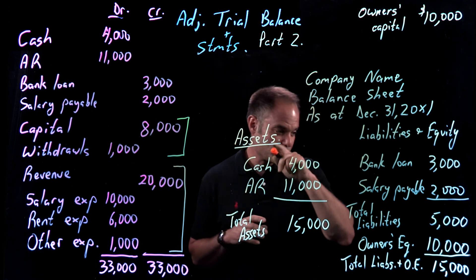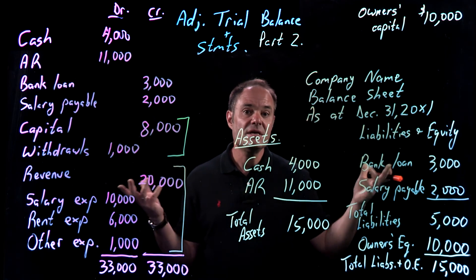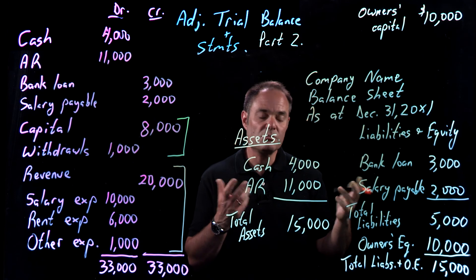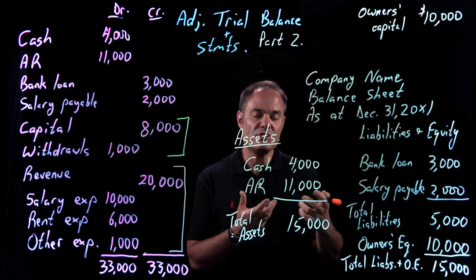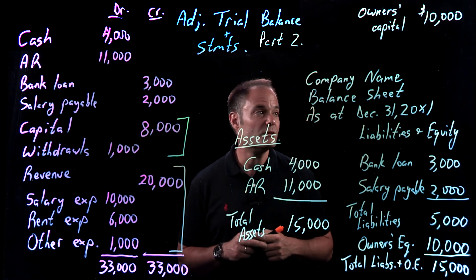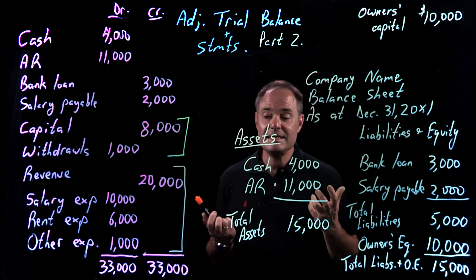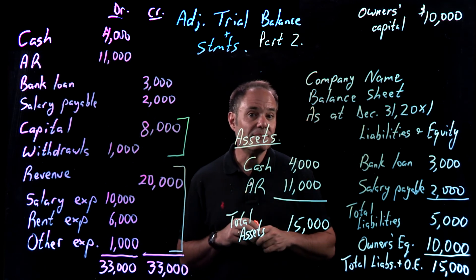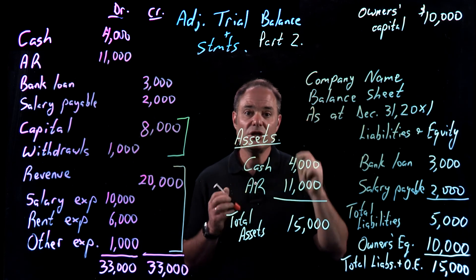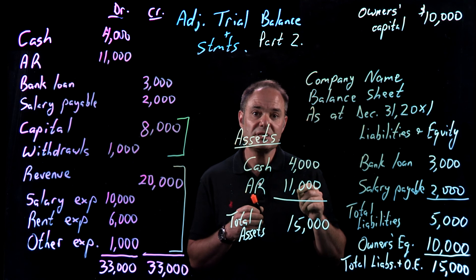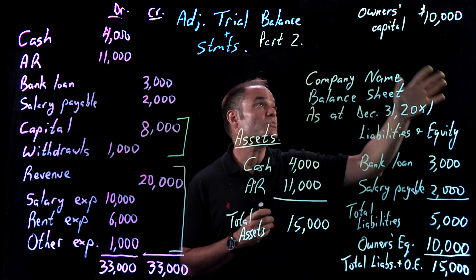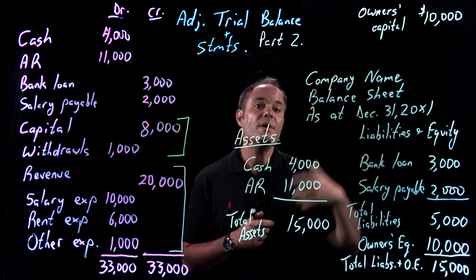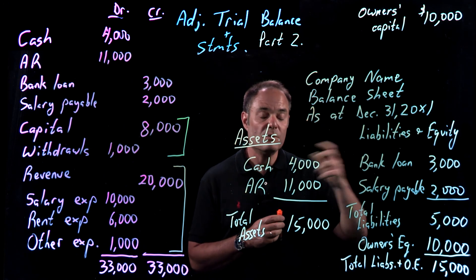So that takes us through our financial statements. These are obviously very simple in comparison to the statements you might get from a large corporation, but the process is exactly the same — there's just more steps, or rather they're a little bit more complicated and there are more transactions. We now have a good handle on how to build our financial statements, but we're not done yet. In our next video, we'll look at how we close out our accounts in order to get ready for the next period — because once we've done this balance sheet as of December 31, 20X1, we have to get ready for 20X2.